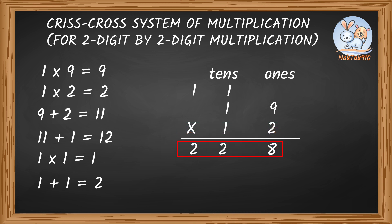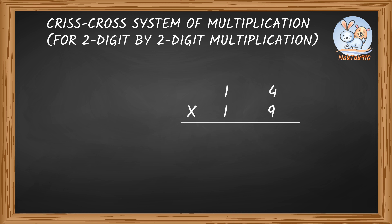This might sound too long, because I'm thinking out loud for you. But if you do this just by yourself, it's super simple. Try 1. Just tell the answer. 4 times 9 equals 36. 4 plus 9 plus 3 equals 16. 1 times 1 and 1 plus 1 equals 2. 266.